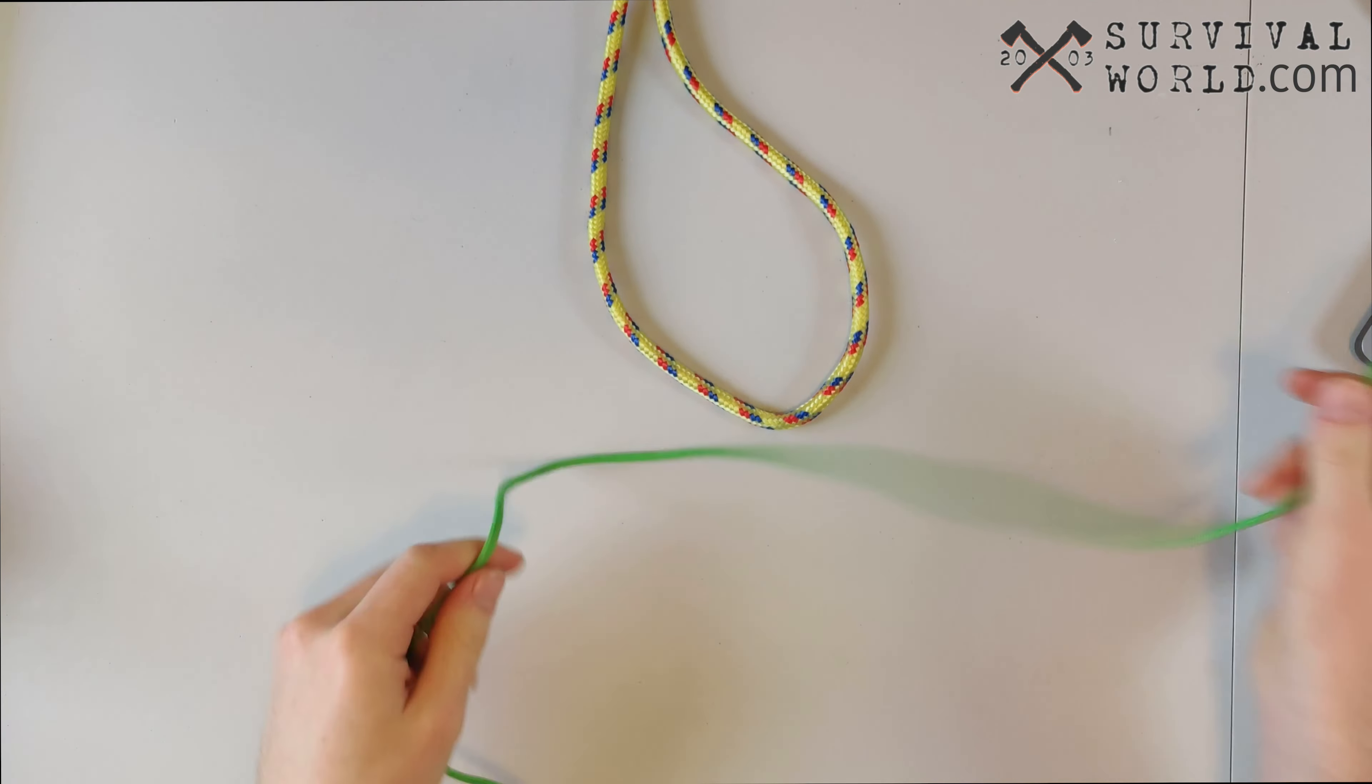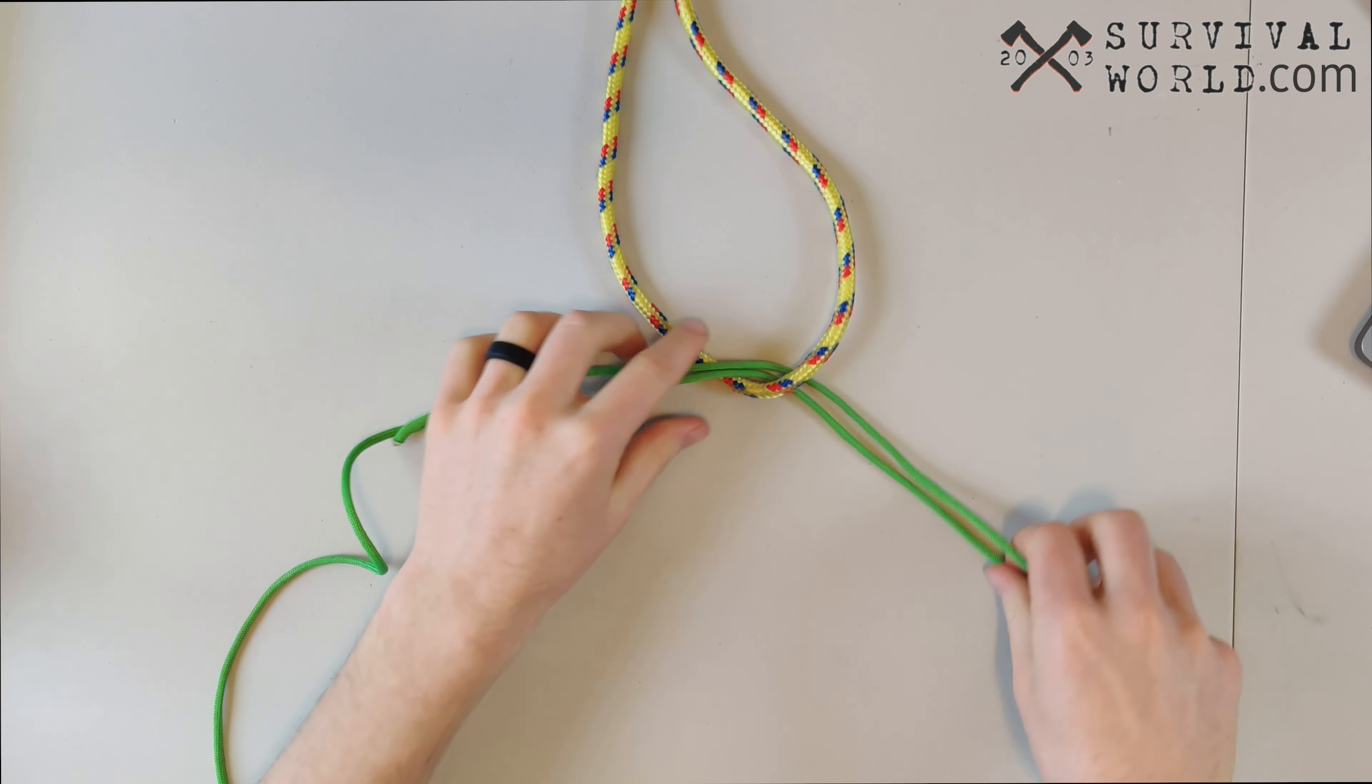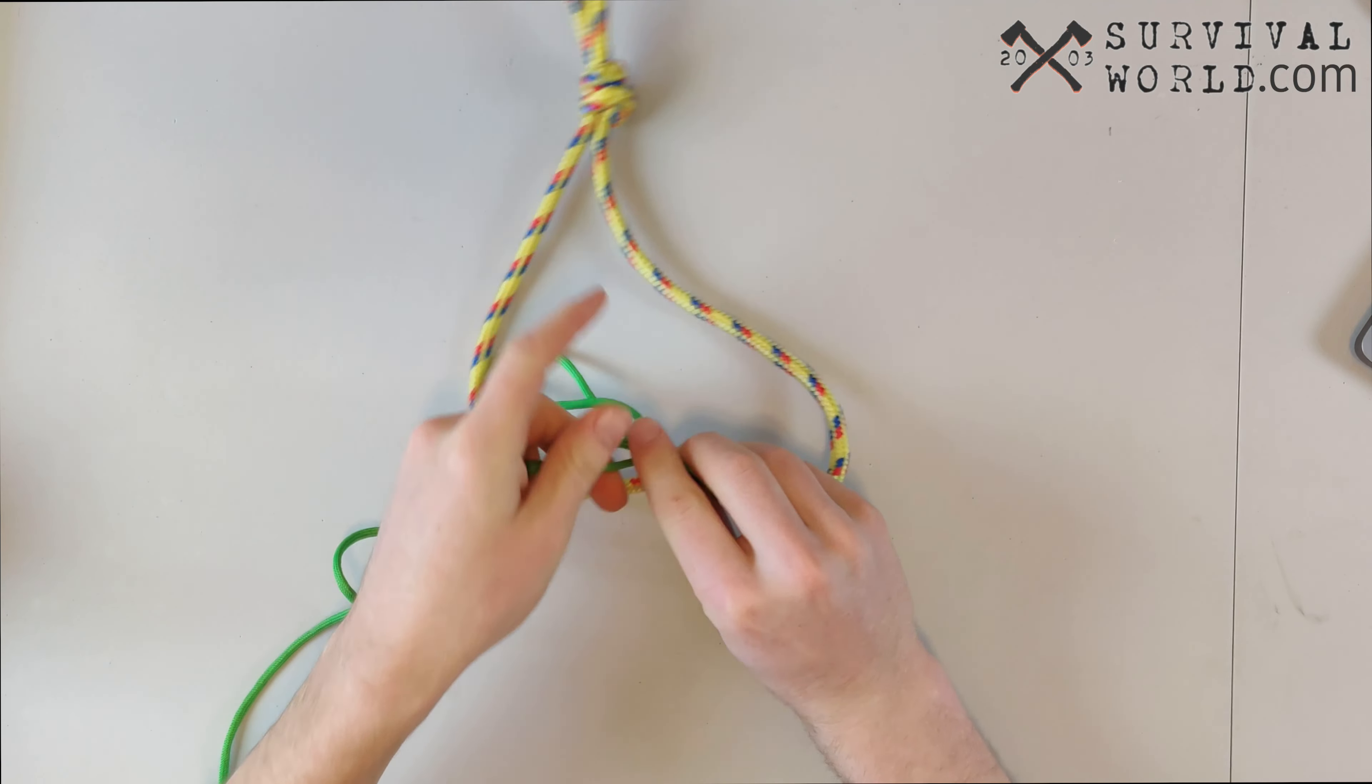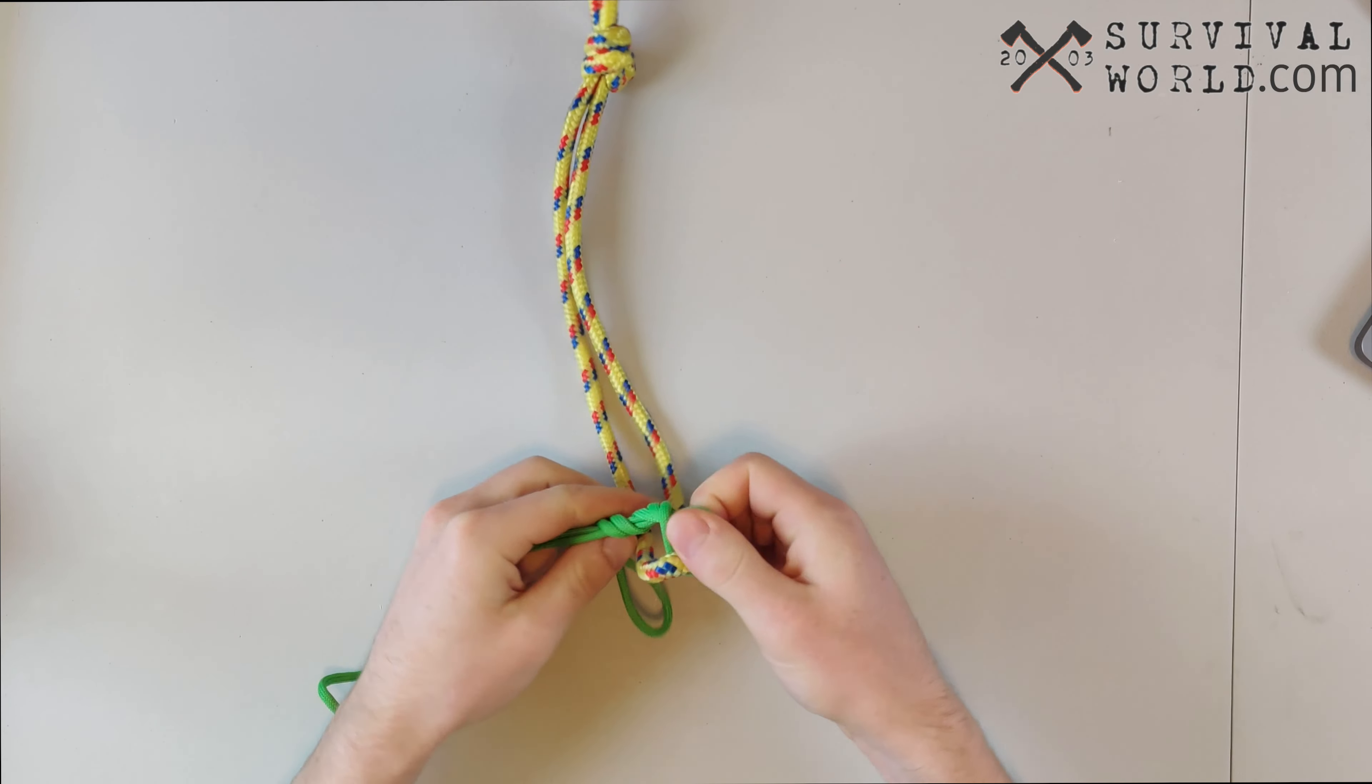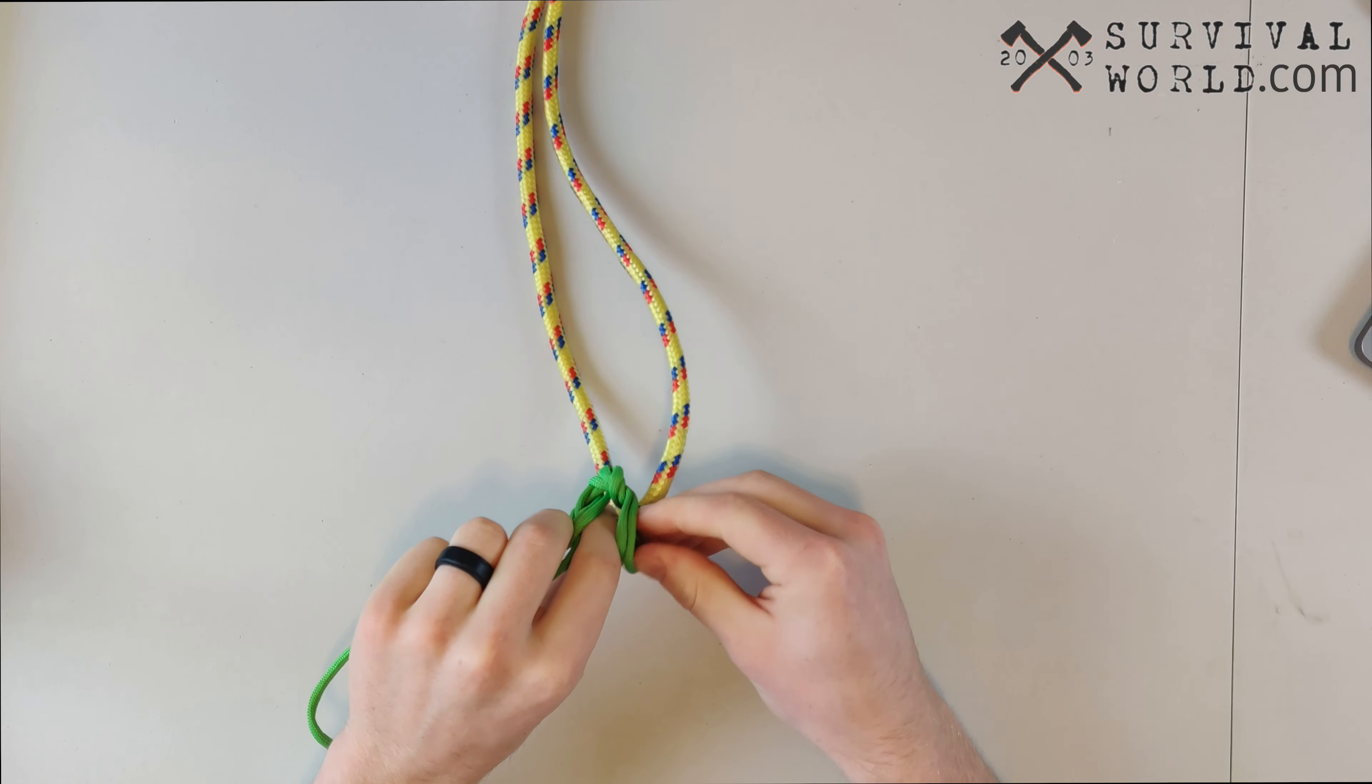So again, we're going to take our rope and double it up here. We're going to wrap it through whatever we're trying to tie it to, and we're just going to start wrapping it around itself here with our doubled up section of line. You want to get about four wraps in there, and then we'll go back to our very first loop and shove it through there.